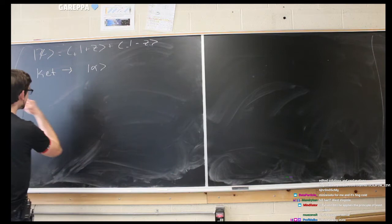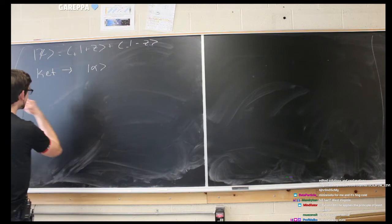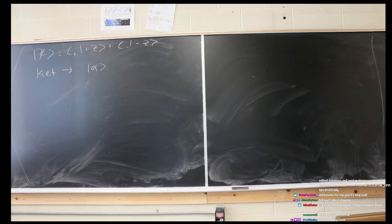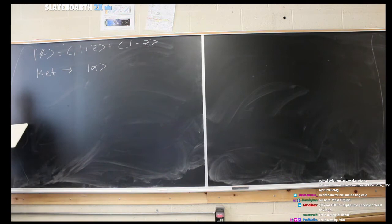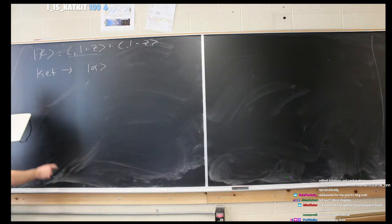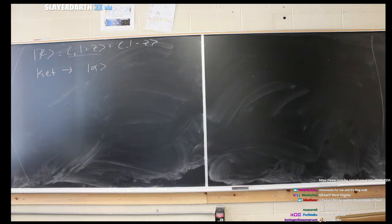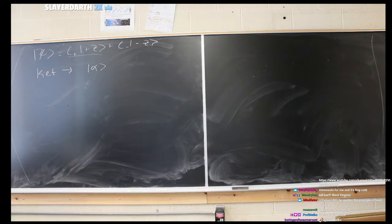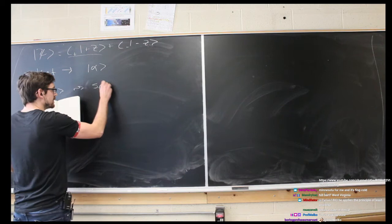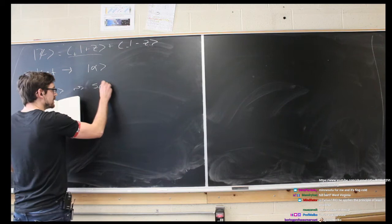The ket looks like this in Dirac notation: it's a vertical line with some value inside and then an angle bracket closing it. So if we were to write a spin state in the z-direction, we'd have a ket that represents spin up in the z-direction.